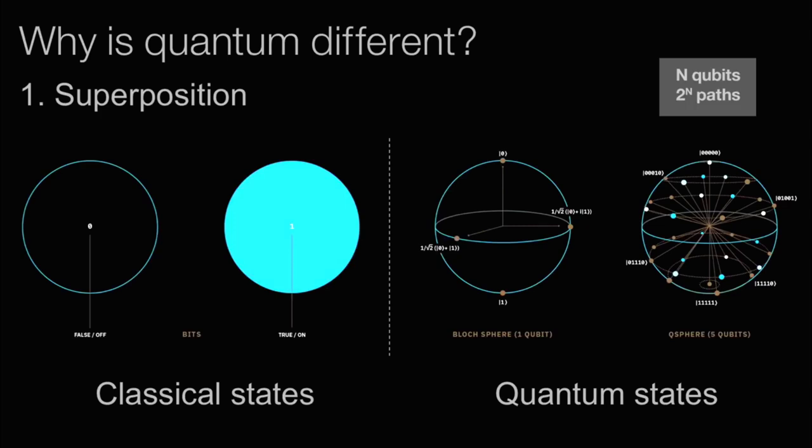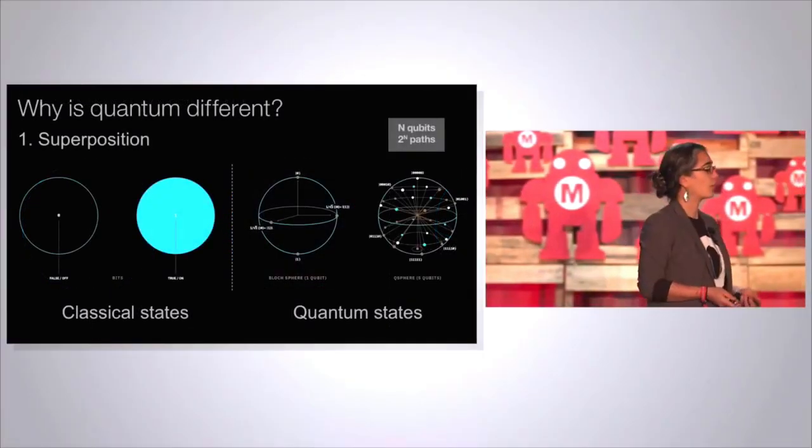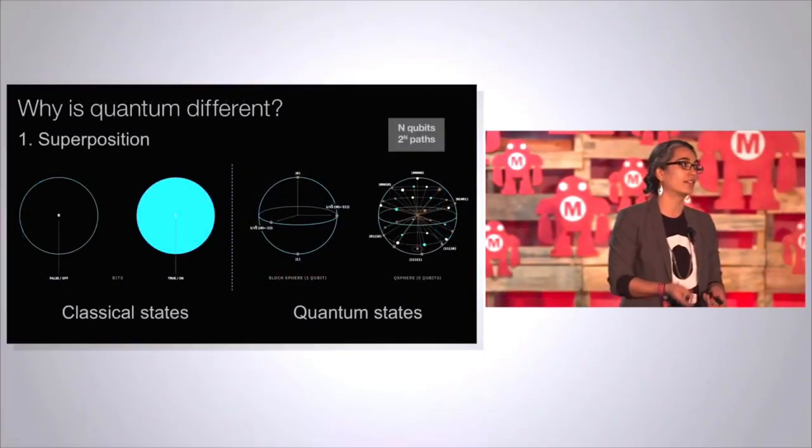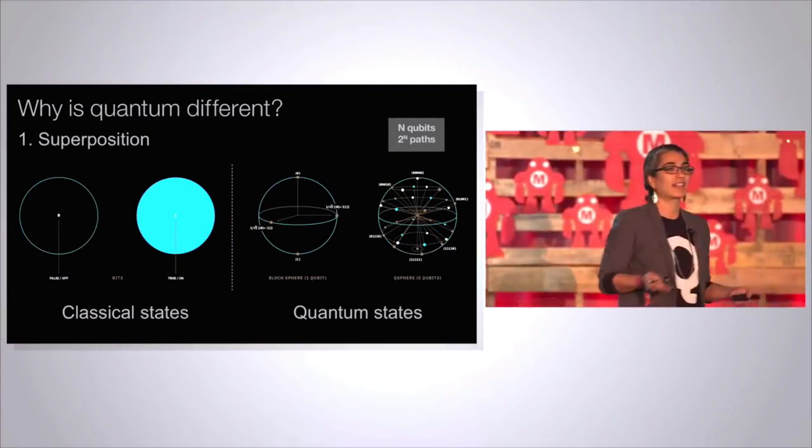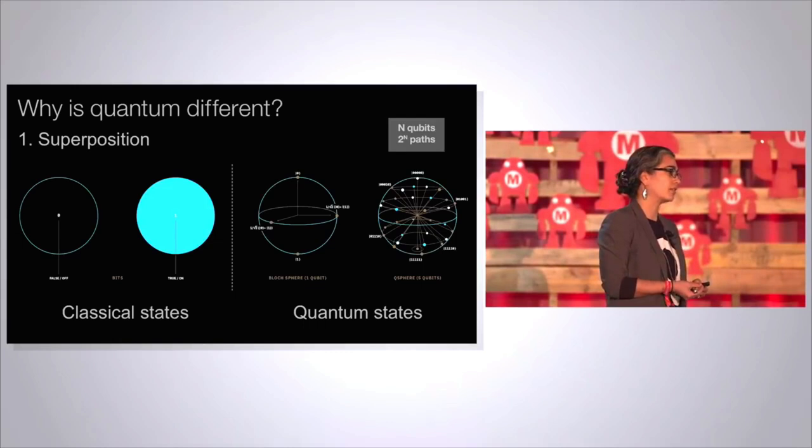One of the effects is superposition. So classical information is basically a string of zeros and ones. Everything that classical computing has enabled boils down to a sequence of zeros and ones. Quantum computing or quantum information has this property that the states can exist in a superposition of zero and one.